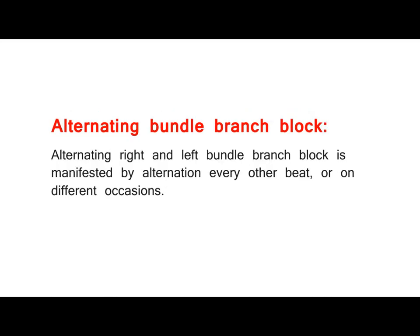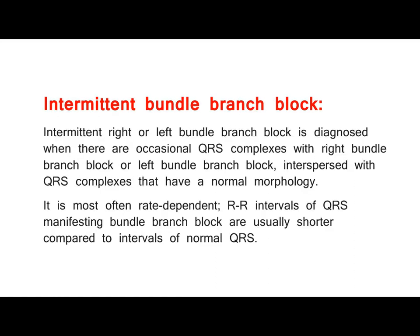Alternating bundle branch block: alternating right and left bundle branch block is manifested by alternation every other beat or on different occasions. Intermittent bundle branch block is diagnosed when occasional QRS complexes with right or left bundle branch block are interspersed with QRS complexes of normal morphology. It is most often rate-dependent, where RR intervals of QRS manifesting bundle branch block are usually shorter compared to intervals of normal QRS.